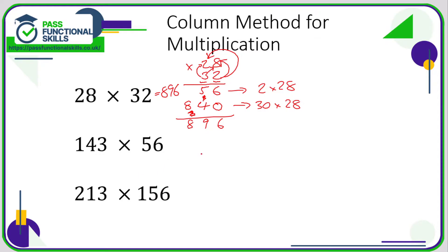Let's look at the next example: 143 multiplied by 56. We've got a three-digit and a two-digit number — I'd put the two-digit number underneath so that we only need two lines of working, otherwise you'll need three lines, which is what you'll see in the final example. On the top line I'm going to do 6 times 3, 6 times 4, and 6 times 1, and on the second line I'll put in a zero then do 5 times 3, 5 times 4, and 5 times 1.